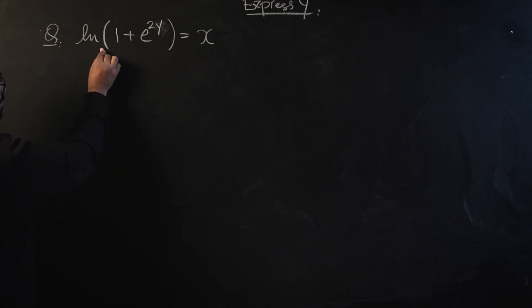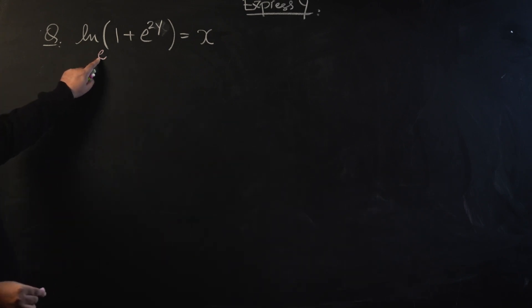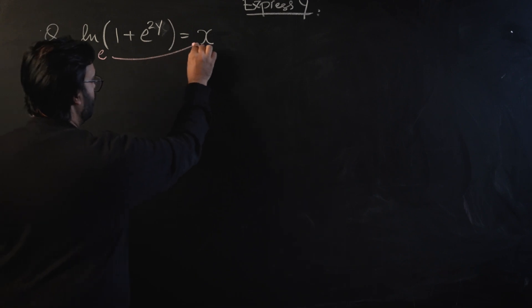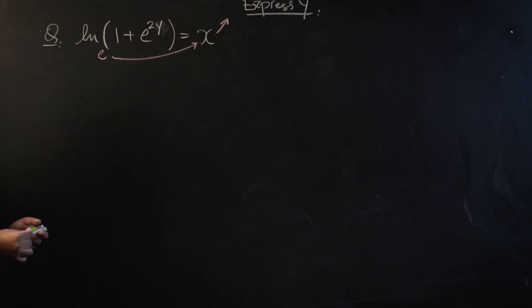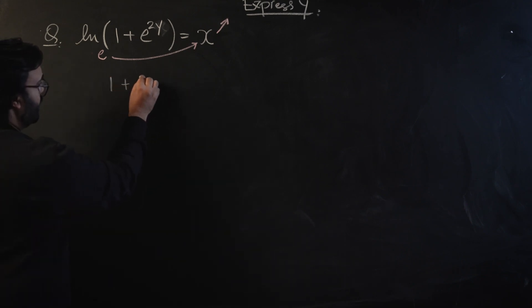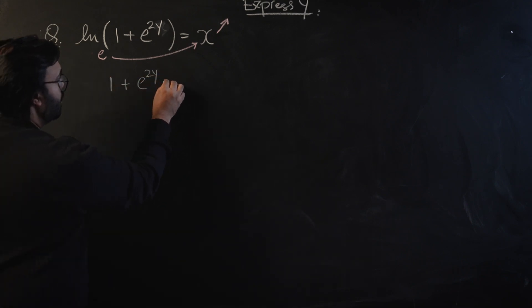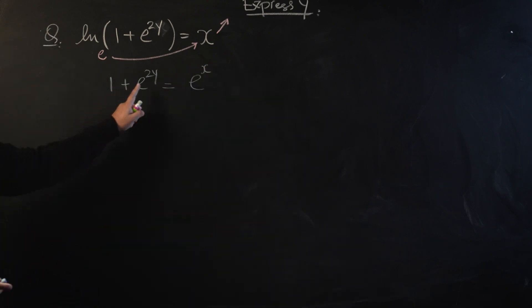So the first step that we are going to do is we're going to remove this logarithm. We know that the base for a natural logarithm is always e. Let's send this e over to the other side and send that number into the power.